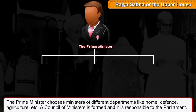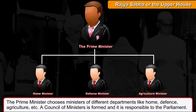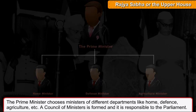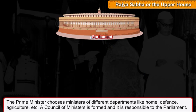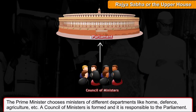The Prime Minister chooses ministers of different departments like Home, Defence, Agriculture, etc. A Council of Ministers is formed, and it is responsible to the Parliament.